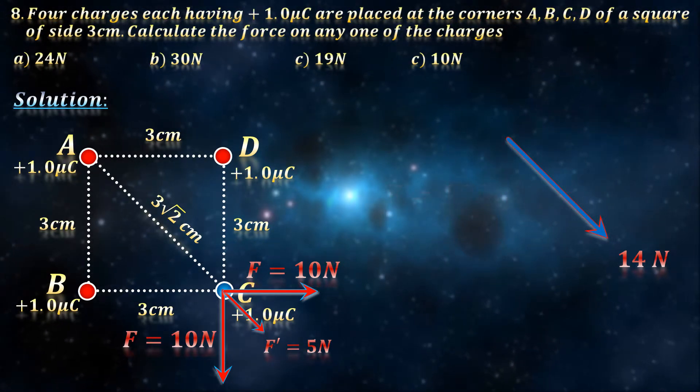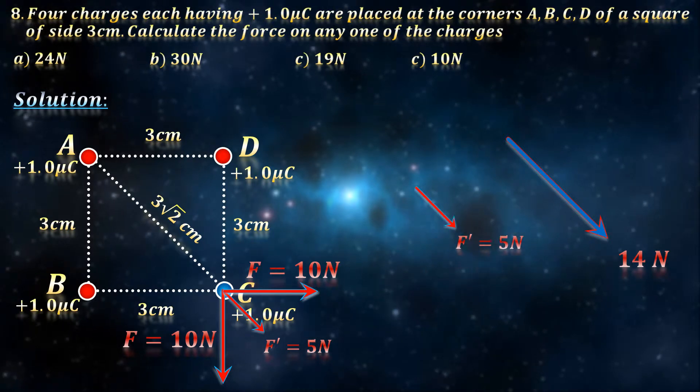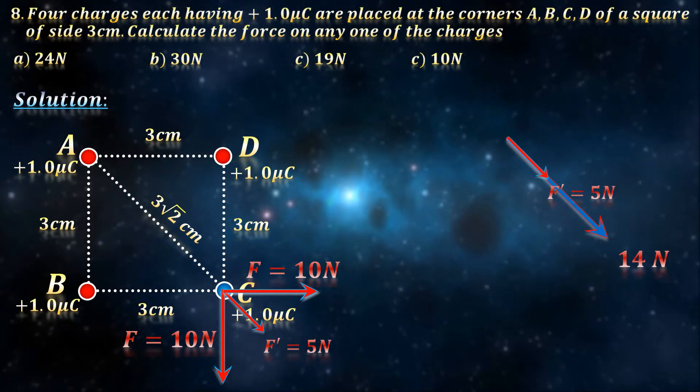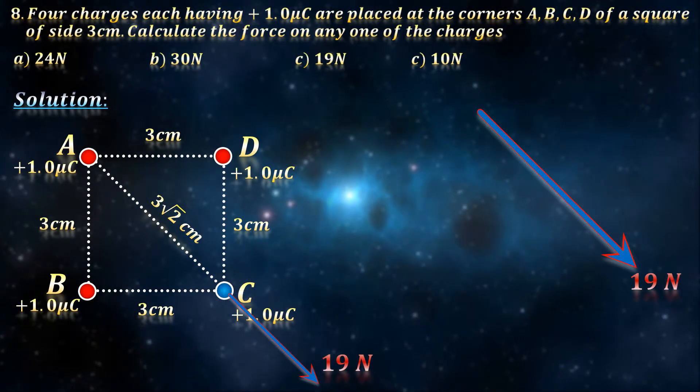Now notice that this 14 N resultant is parallel to the third 5 N vector, making it very easy to add them, giving us a final answer of 19 N along AC.